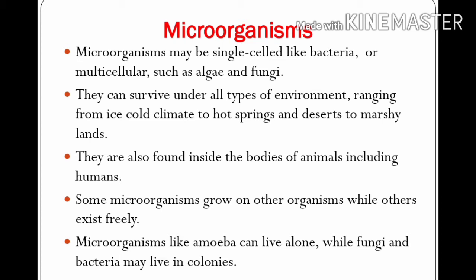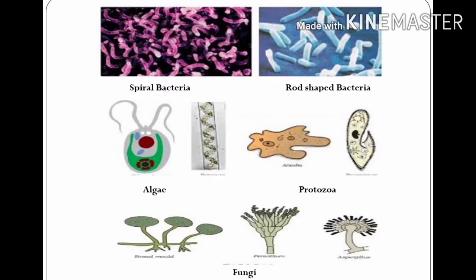Microorganisms like amoeba can live alone while fungi and bacteria may live in colonies. The first two pictures show bacteria — one is spiral-shaped and another is rod-shaped. Next is a picture of algae: Spirogyra is an example of algae, which can prepare its own food because it contains chlorophyll and can perform photosynthesis like plants. Amoeba and paramecium are examples of protozoa — both are single-cellular organisms. Bread mold, penicillin, and aspergillus are examples of fungi.